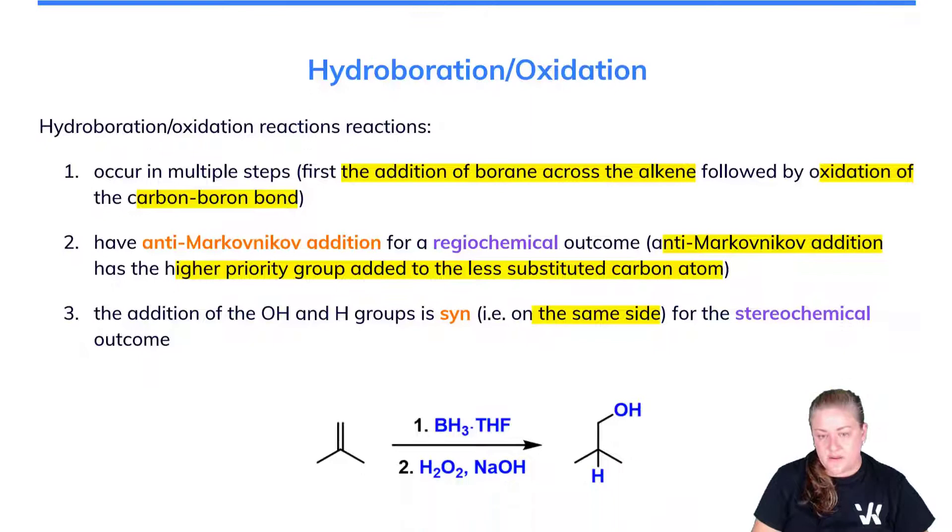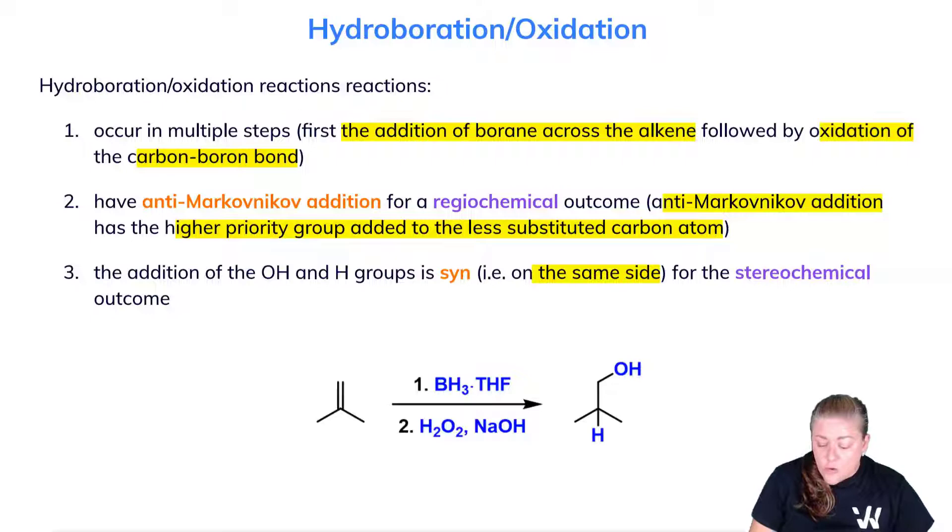The reaction is shown below where the OH group is now added to the less substituted carbon atom, which is anti-Markovnikov addition. The hydrogen has been added at the more substituted carbon. The alkene has been transformed into an alkane.